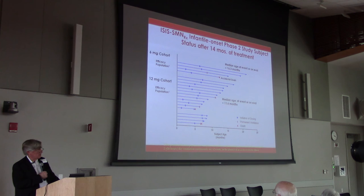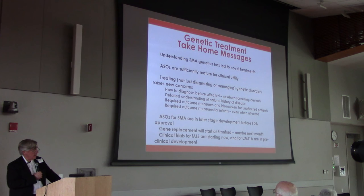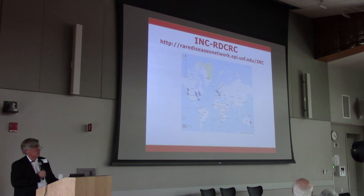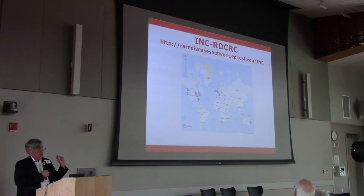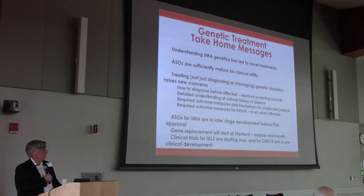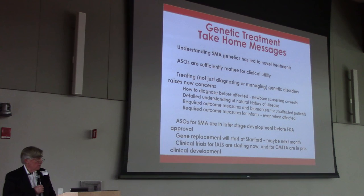Understanding genetics has led to novel treatments. We have a number of things we're now able to do for treating different forms of nerve damage. We're starting a new type of treatment — reprogramming a virus to carry in the missing gene and treat the nerves. We'll start that hopefully within the next month or two here at Stanford; it's the first gene-virus therapy I've done at Stanford.